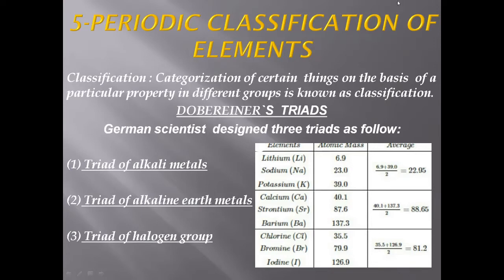Now, classification means what? Classification means categorization of certain things on the basis of a particular property into different groups. Sorting out different types of elements or compounds based on their similarity in different properties is called classification.